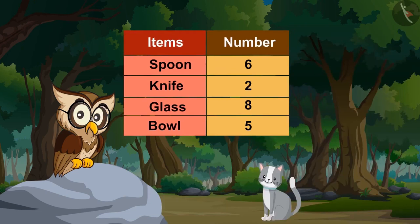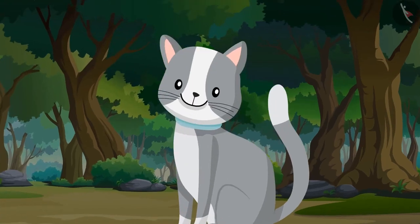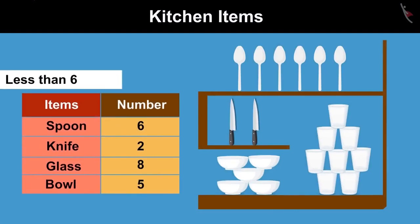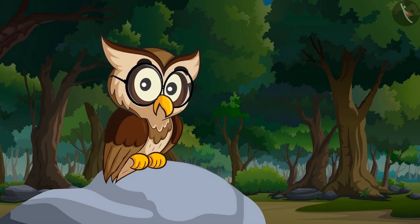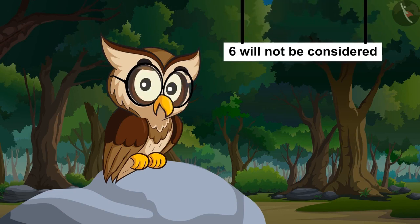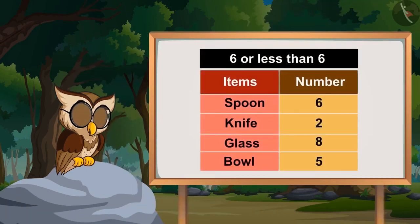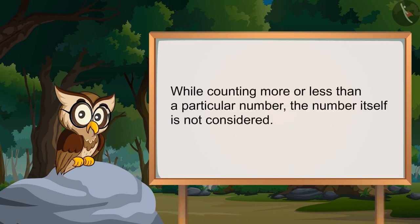But Saloni, if I would have asked which kitchen item is more than or equal to 6, then your answer would be correct. Oh, now I get it. So now can you tell me which kitchen item is less than 6 in number? Knife and bowl. Absolutely right! While counting less than a particular number, the number itself is not considered. Similarly, if we look at the numbers of items which are either 6 or less than 6, we will get knife, bowl, and spoons.